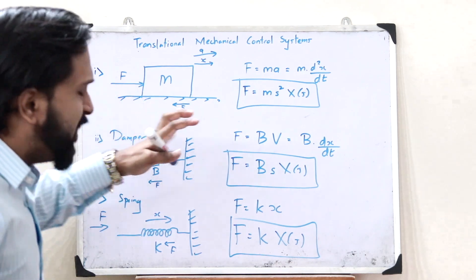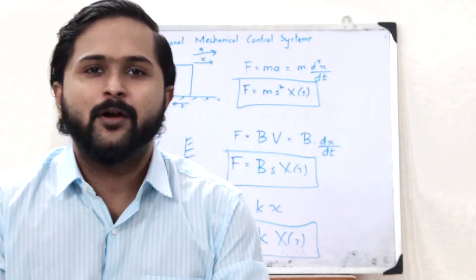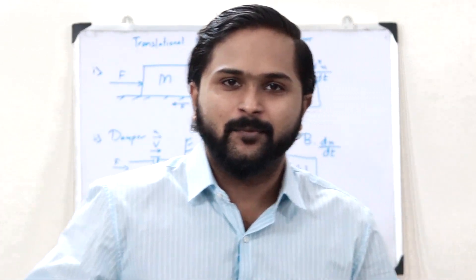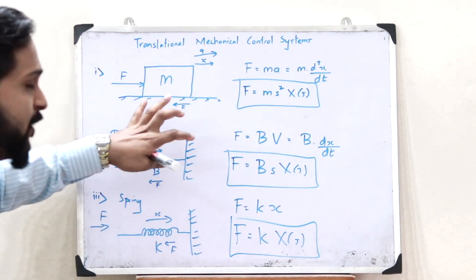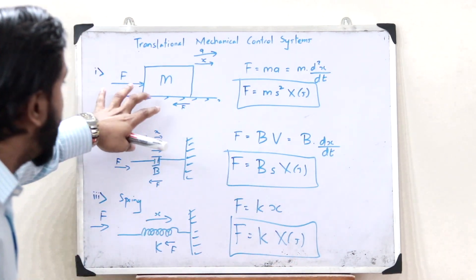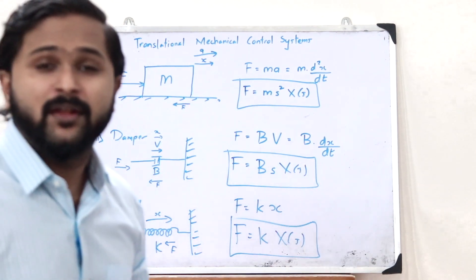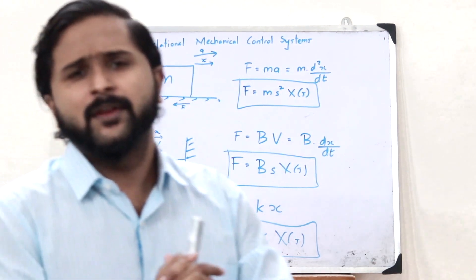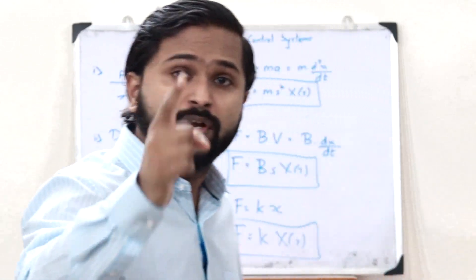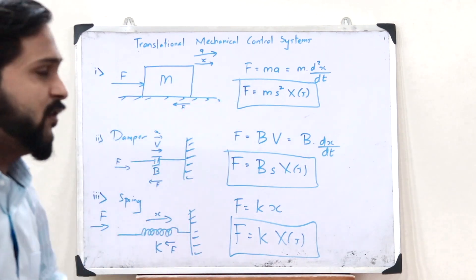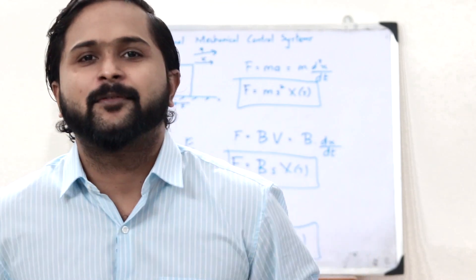So this is the main idea behind how you can develop a mathematical model of a mechanical control system. First we have to find the opposing force acting on each of these elements. Once we find the opposing force, we then find the Laplace transform, and when we do that, things get very simple. In the next video I'll be discussing the same thing but in the case of a rotational mechanical control system, and after that let's dig into how we can mathematically model these control systems.